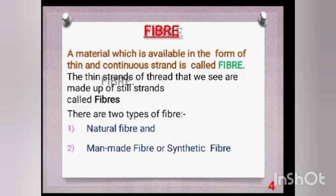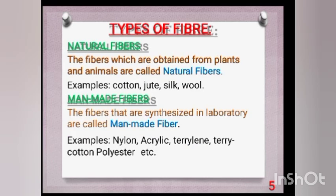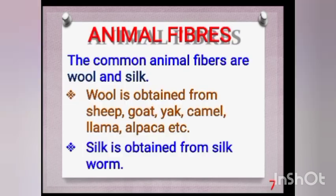Natural fibers are obtained from plants and animals — like cotton, jute, wool, and silk. Man-made fibers are also called synthetic or artificial fibers; they are synthesized in the laboratory, like nylon, terylene, acrylic, and polyester.